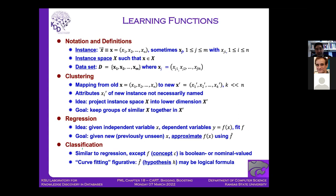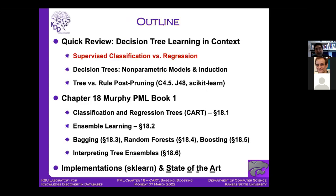The focus of this chapter is classification and regression. Regression takes an independent variable x and a set of dependent variables y representing a mapping f(x), with the objective of fitting f using an approximation f-hat. Classification is similar except f is usually denoted c and takes boolean or nominal values — it can be a logical formula. Decision trees can encode any propositional formula because they can express disjunctive normal form.